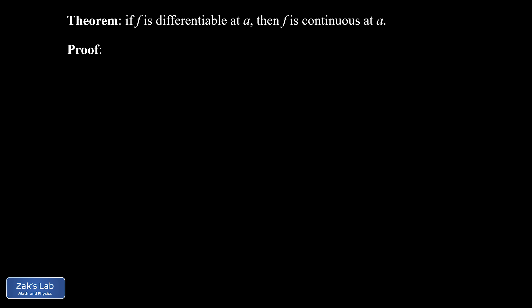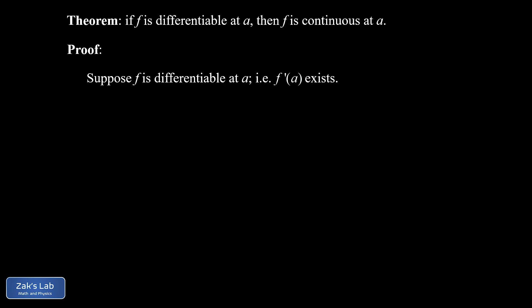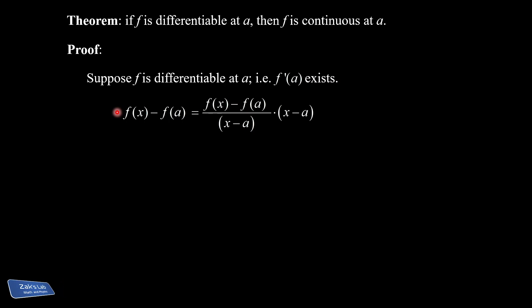Here's our theorem: if f is differentiable at a, then f is continuous at a. We start our proof by supposing f is differentiable at a — in other words, f prime of a exists and is finite. Here's the algebraic trick: I start with the expression f of x minus f of a, which we want to show has a limit of zero. I write it as f of x minus f of a over x minus a, multiplied by x minus a. This is algebraically legal since we're dividing and multiplying by the same number. Now we apply the limit, having avoided ever dividing by exactly zero.